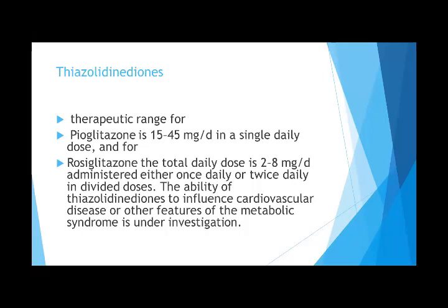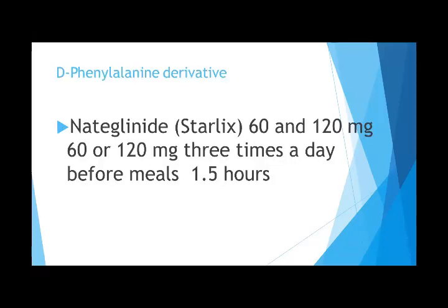Rosiglitazone is given at a total daily dose of 2 to 8 mg, administered once or twice daily. The ability of thiazolidinediones to influence cardiovascular disease and other features of the metabolic syndrome is under investigation, and there are serious cardiovascular side effects. Phenylalanine derivatives — nateglinide — are available in 60 and 120 mg doses given three times a day, 1.5 hours before meals.